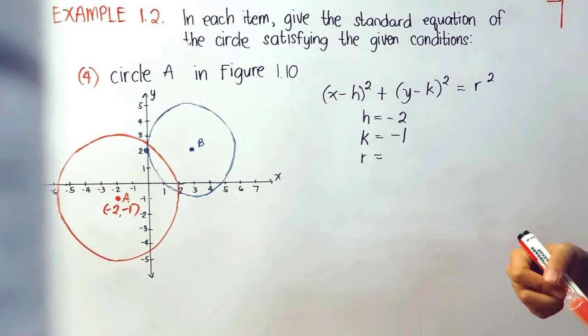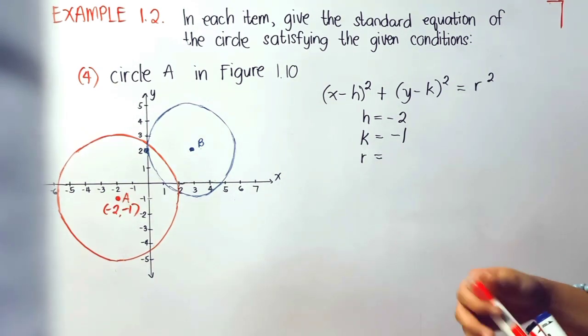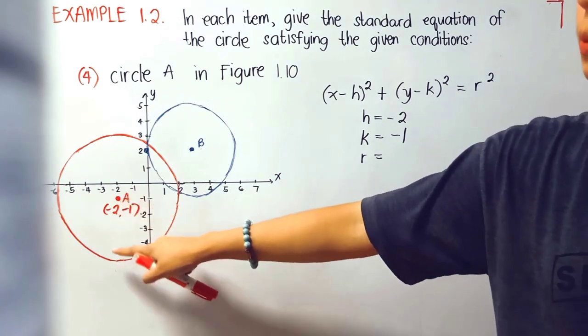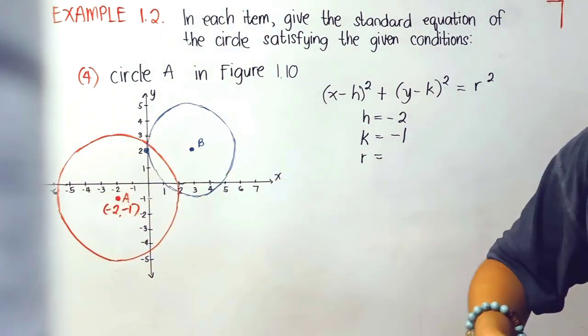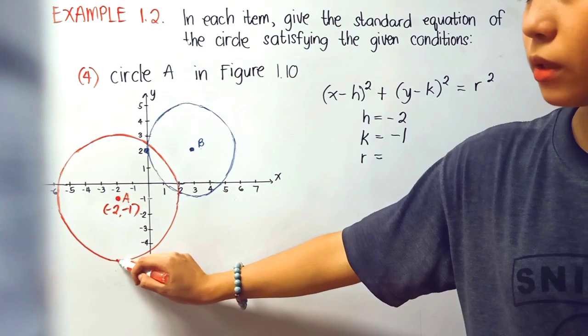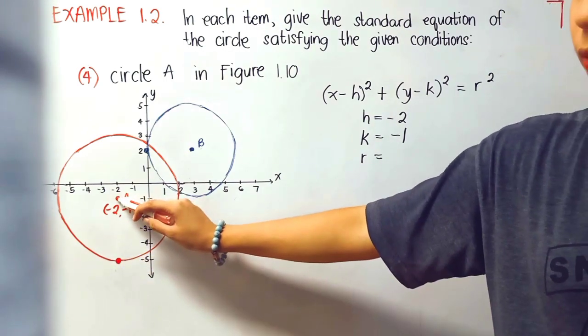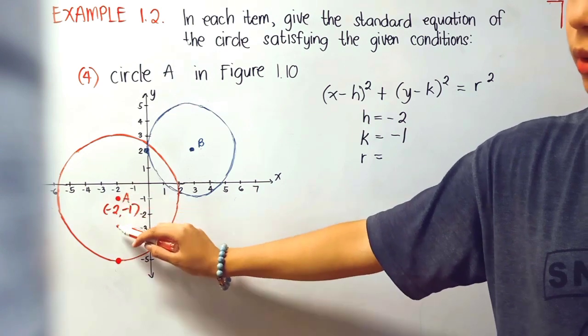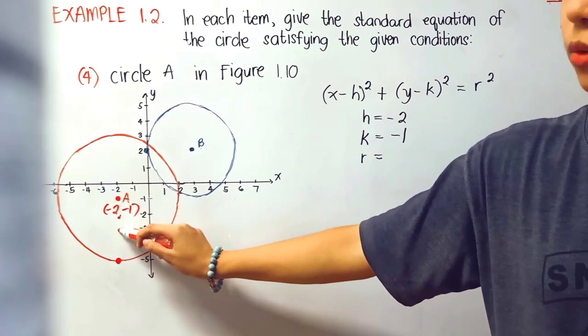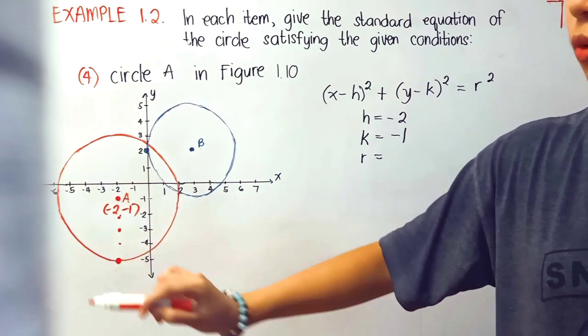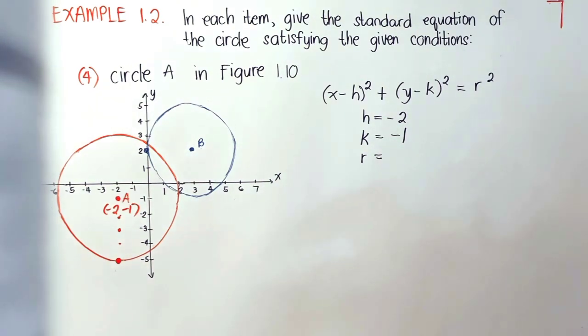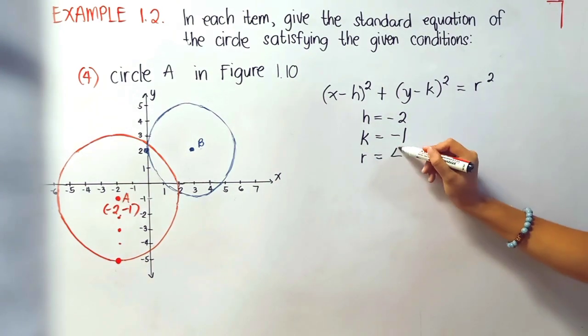Our r is still unknown, so I will be selecting a point here in the circle. I will be choosing this point. Now I will be counting the units from the center to that point: 1, 2, 3, 4. Since they are 4 units away, our radius is 4.